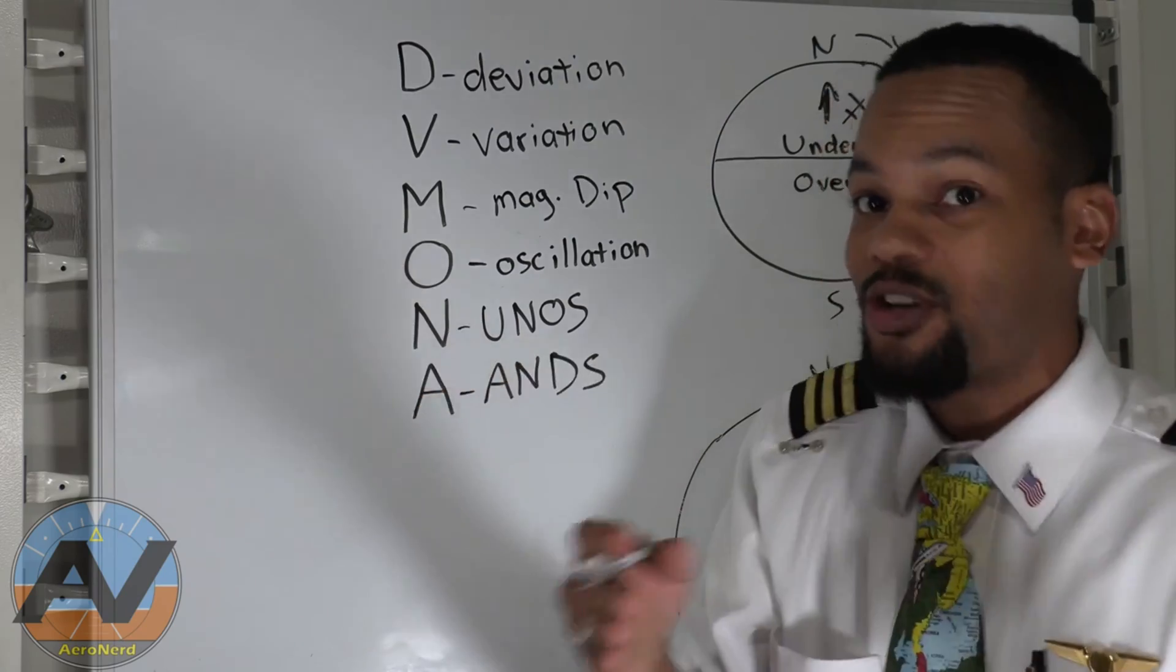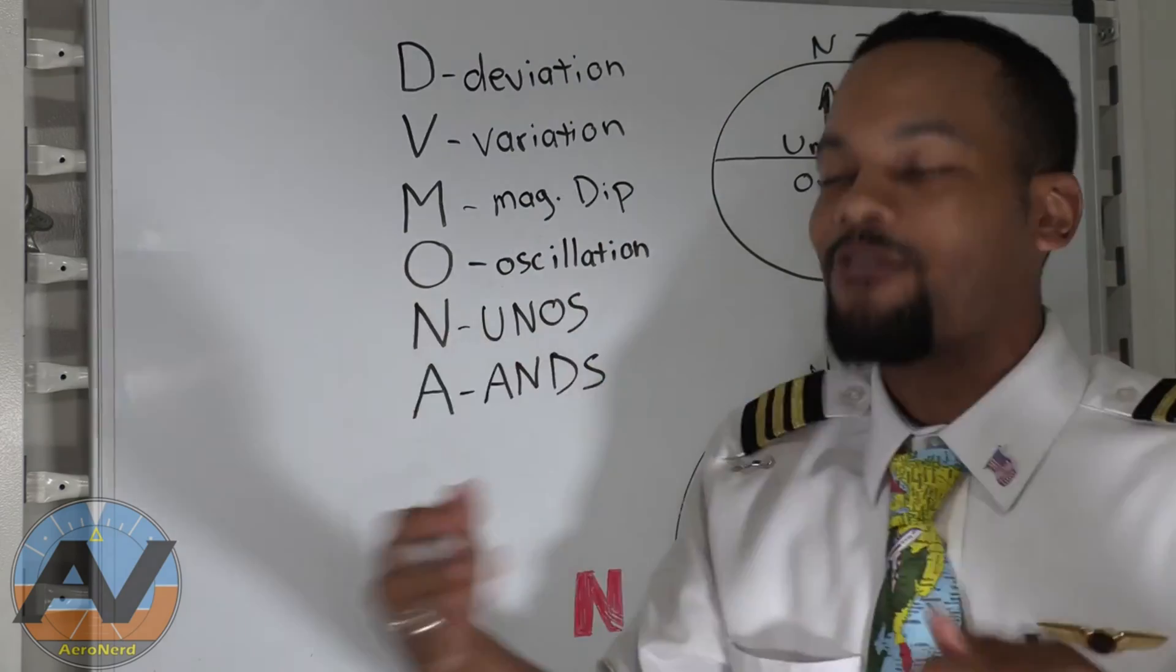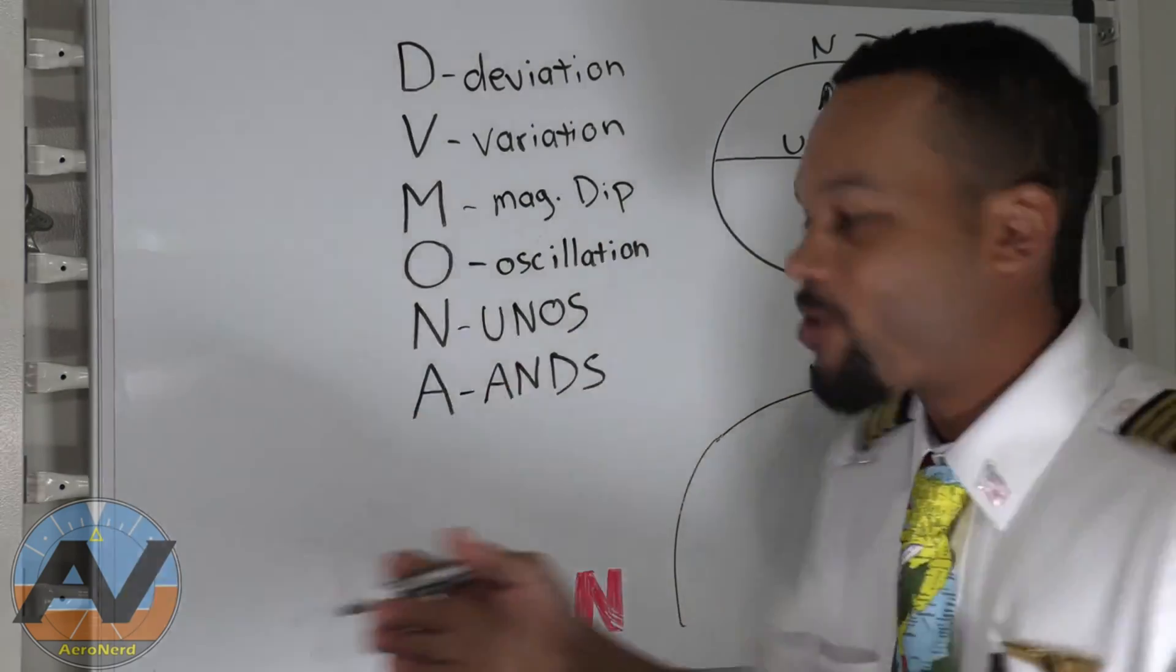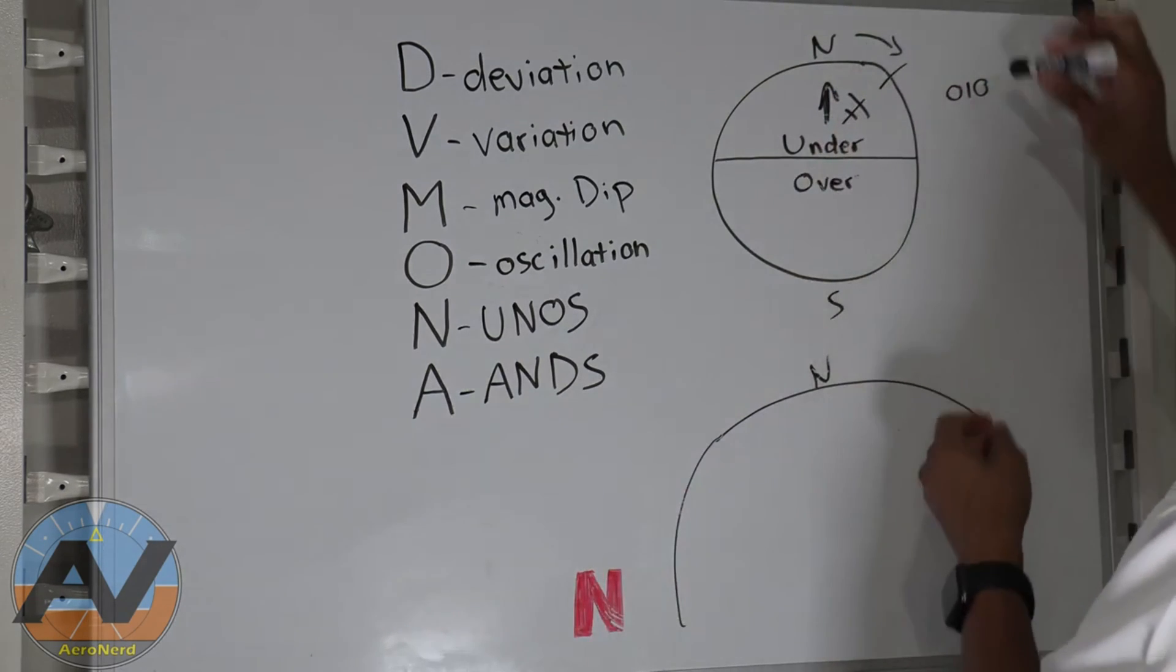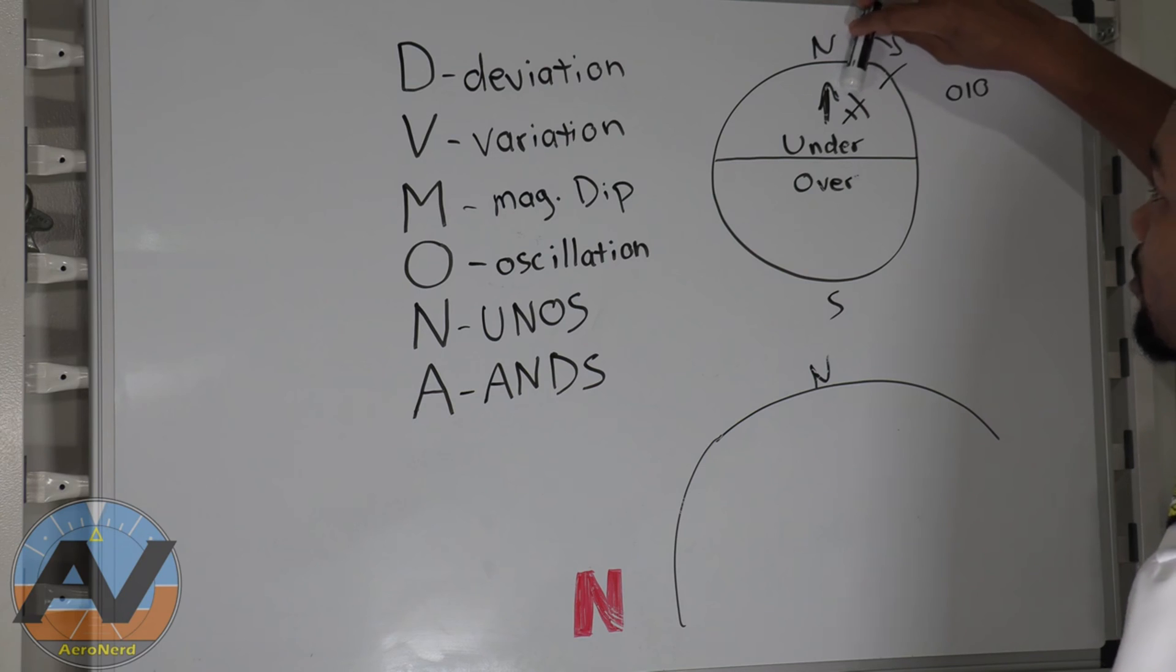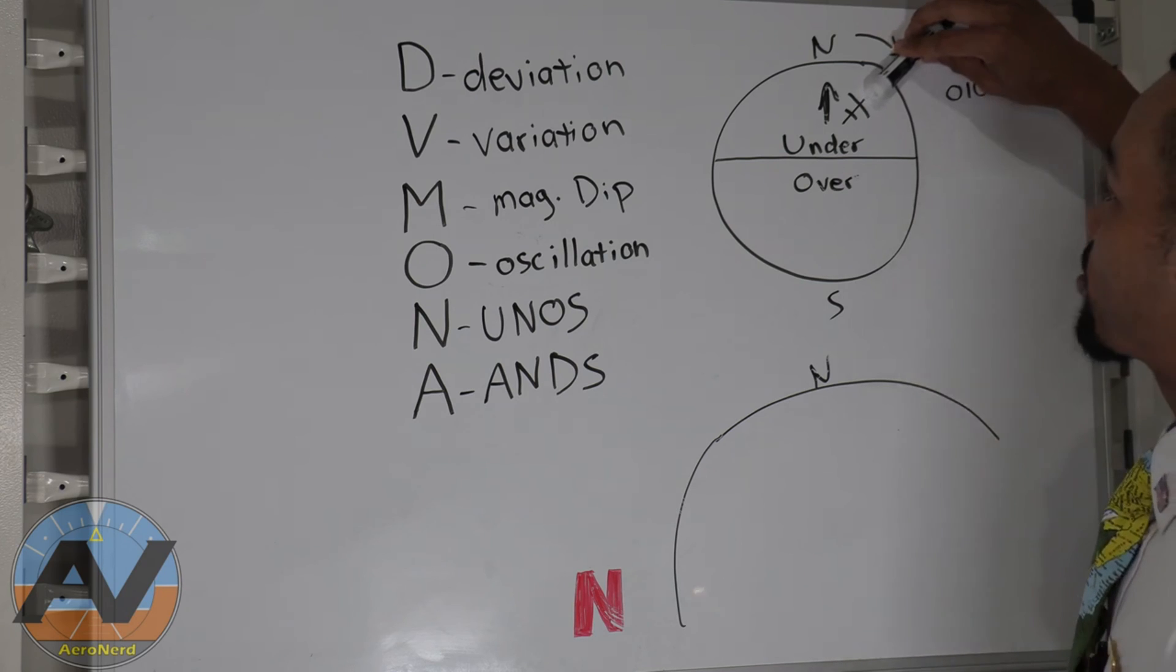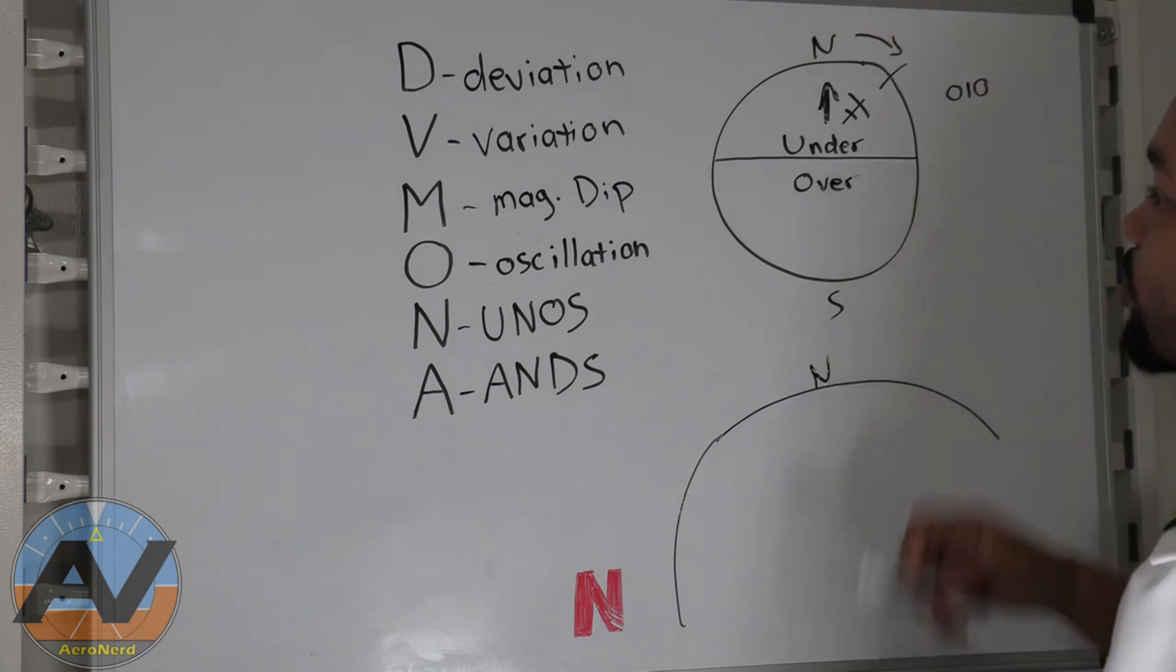So that's why you really have to undershoot your heading. So let's say you want to turn 030. Now when the airplane is actually physically facing 030, it might indicate 010. So that's why when the compass says 010, you are at 030. It has to catch up to you because it moves at a slower rate than the aircraft is turning.